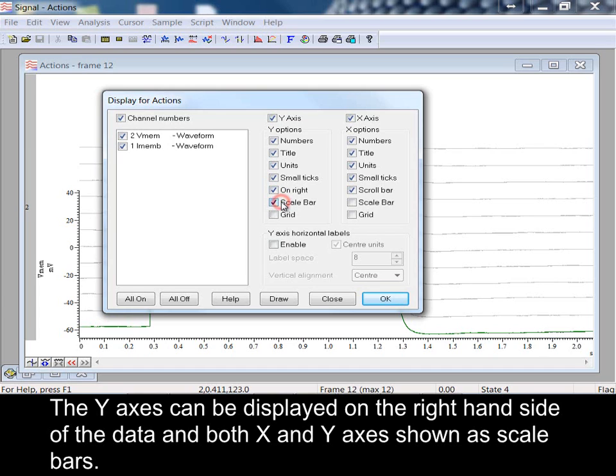The Y-axis can be displayed on the right-hand side of the data, and both X and Y-axis shown as scale bars.